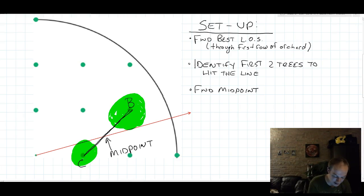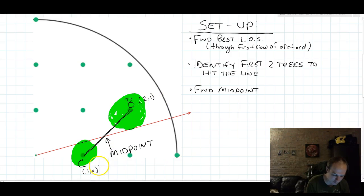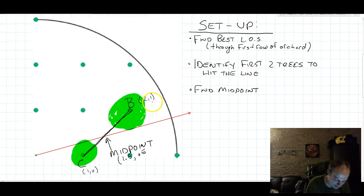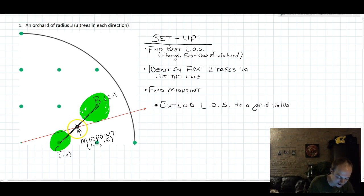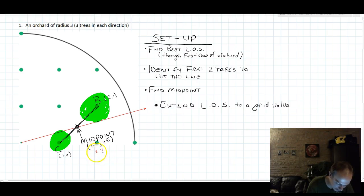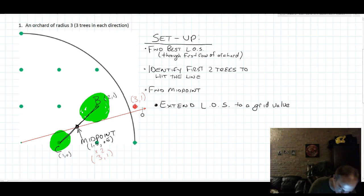To find that midpoint, we can think about this Orchard as having coordinates. Point C has coordinates 1, 0. Point B has coordinates 2, 1. So we can apply the midpoint formula. The midpoint has to be 1.5 — that's the average of 1 and 2 — and 0.5, the average of 0 and 1. It's helpful to extend this line of sight until we meet a lattice point on the grid. If it goes through 1.5 and 0.5, multiply everything by 2 and it also passes through the point 3, 1.